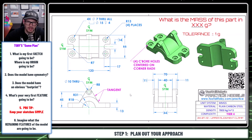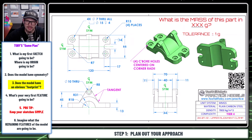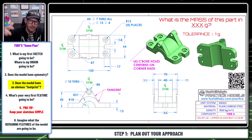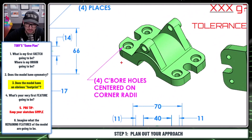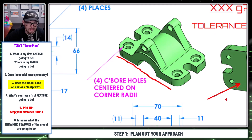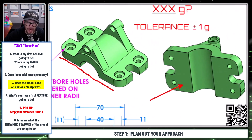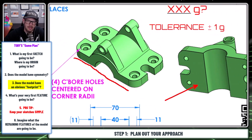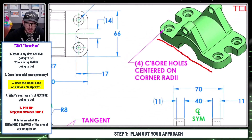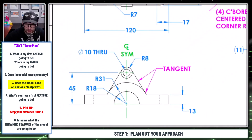The next thing you ask yourself is: is there a clear footprint of the model? Does the model clearly sit onto another device or onto a table in a very obvious way? In the case of this model, it does. This face down here on the bottom — this face right here — this is like the foot of the model. It's the bottom of the model, and so that helps me recognize that the origin is almost certainly going to be down here as well.